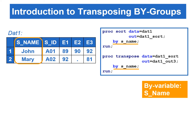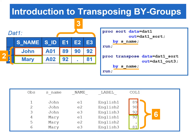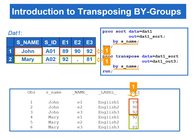So far we have discussed transposing all the observations for selected variables. The following section will focus on transposing by groups, using the same input data set. This program transposes DAT1 using S_name as the BY variable. To use the BY statement in PROC TRANSPOSE, the data set must be previously sorted by the same BY variable. The BY variable is not transposed. The number of observations in the transposed data set — which is 6 — equals the number of BY groups (2) times the number of variables transposed (3). The number of transposed variables equals the number of observations within each BY group, which is 1, with a default name of COL1.